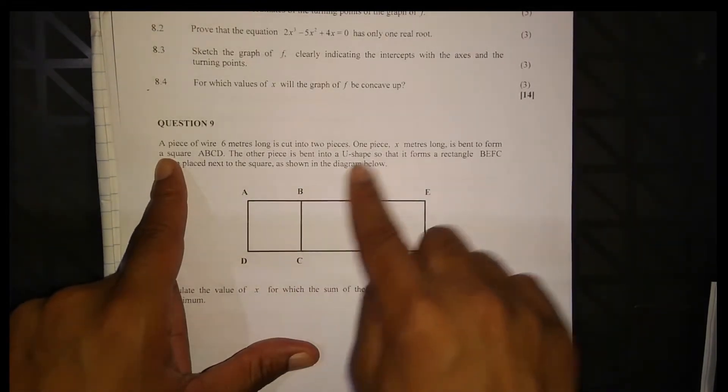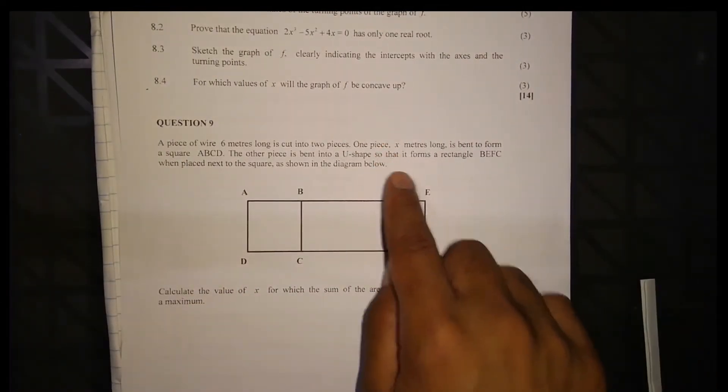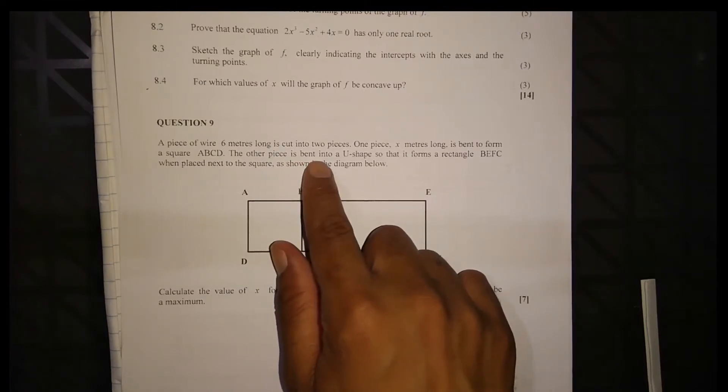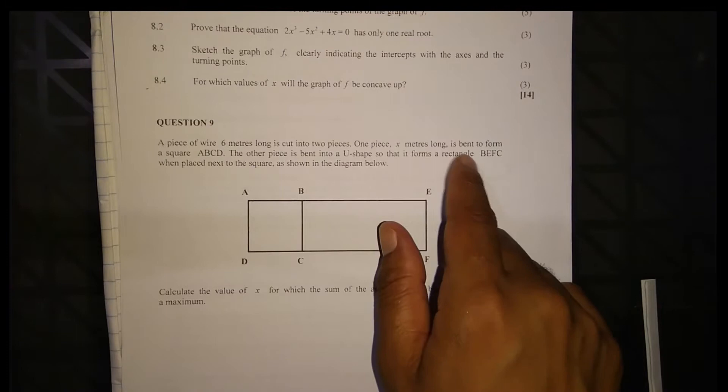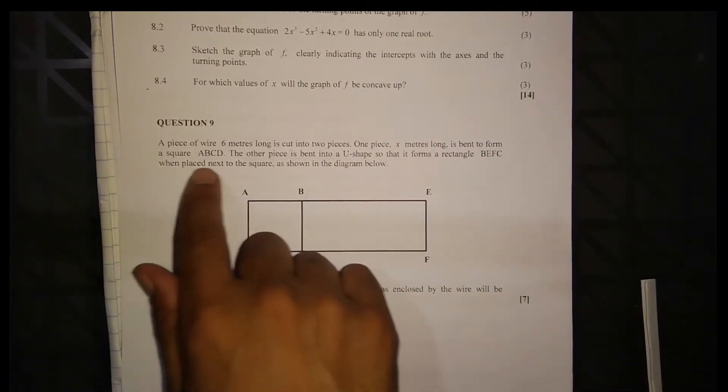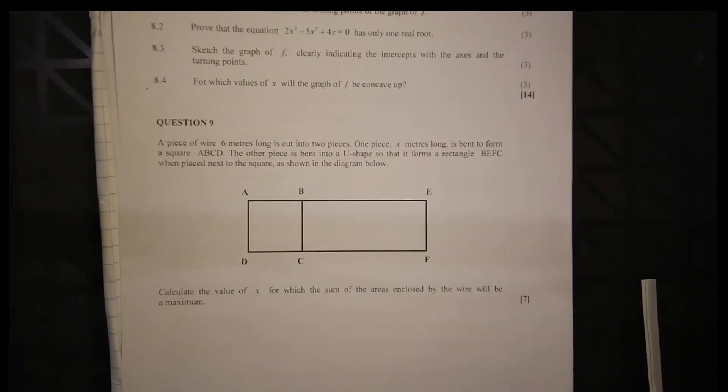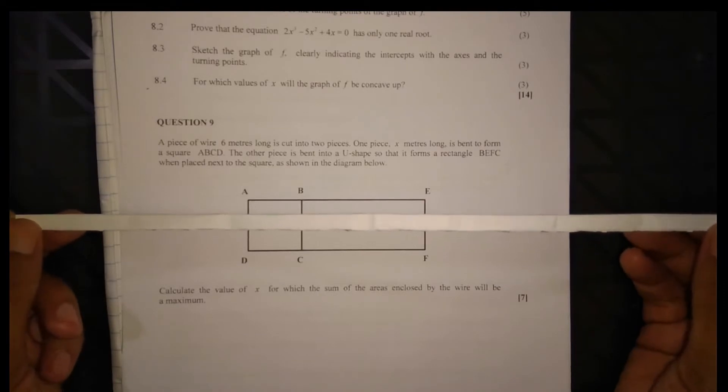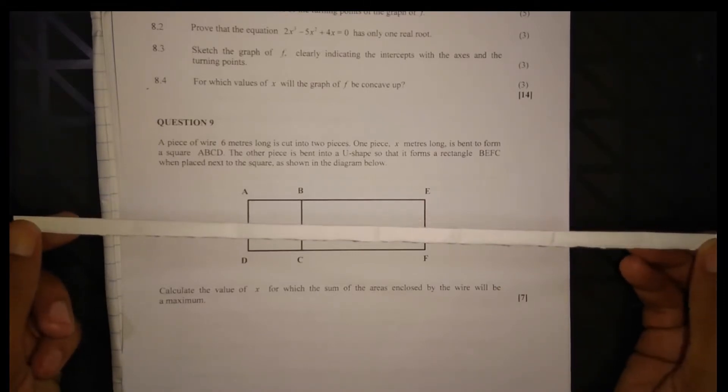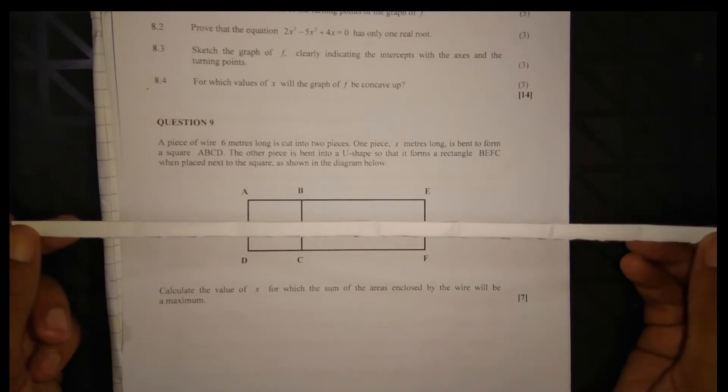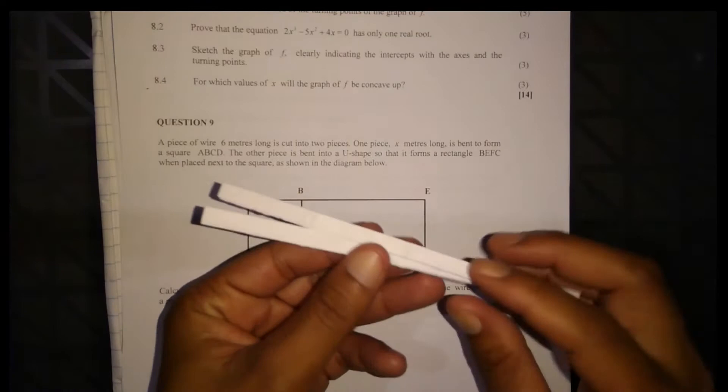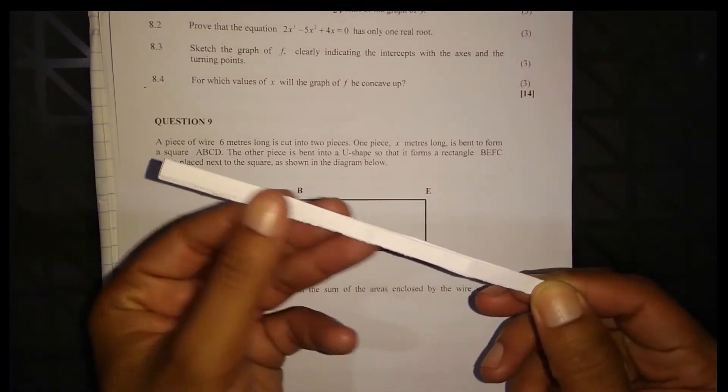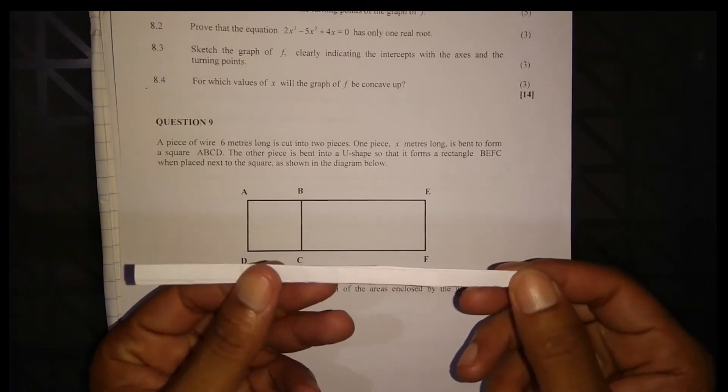This square is formed by one piece, and then the other piece is bent into a U shape so that it forms a rectangle BEFC when placed next to the square shown in the diagram. Let me demonstrate with this piece of paper. Imagine this paper is the wire which is six meters long. We cut it in half, so I cut it in the middle after folding.